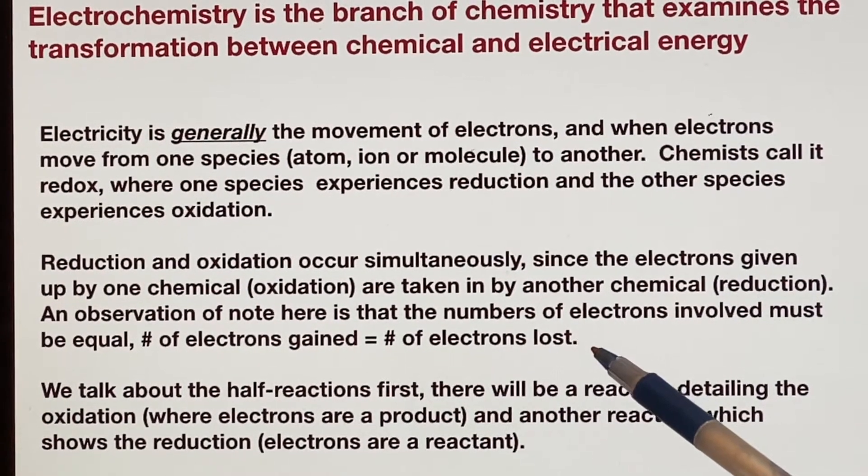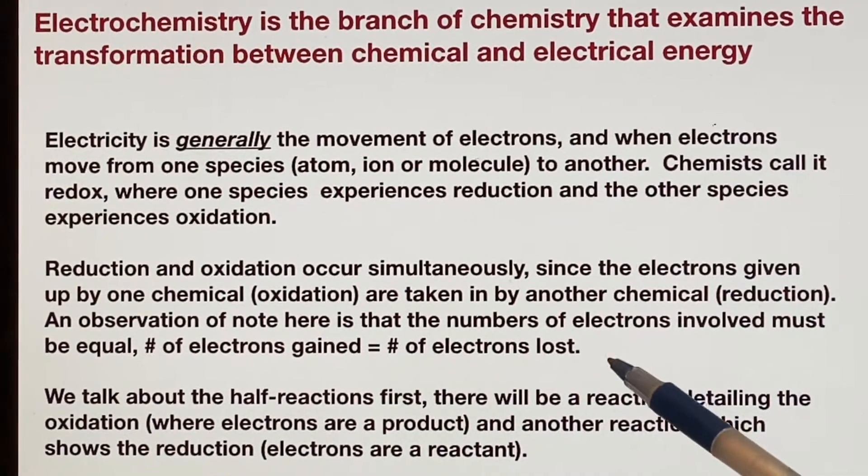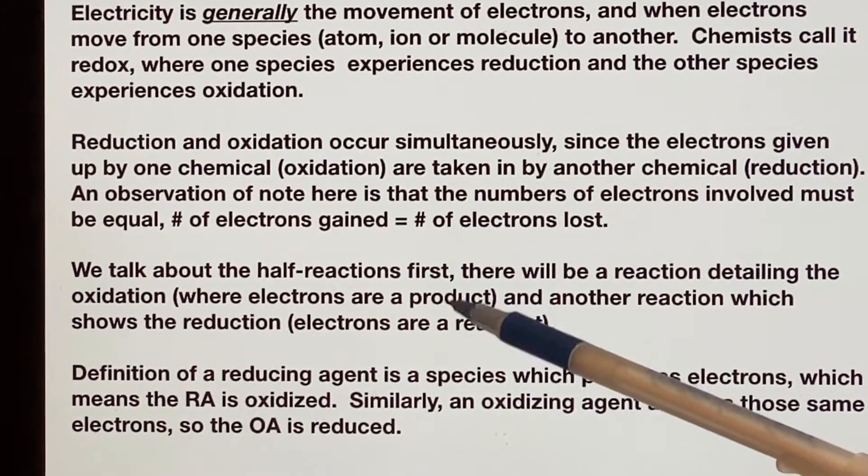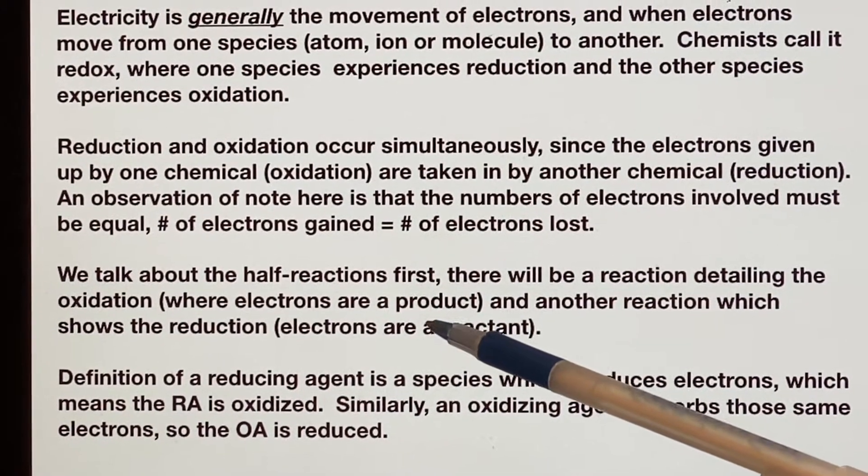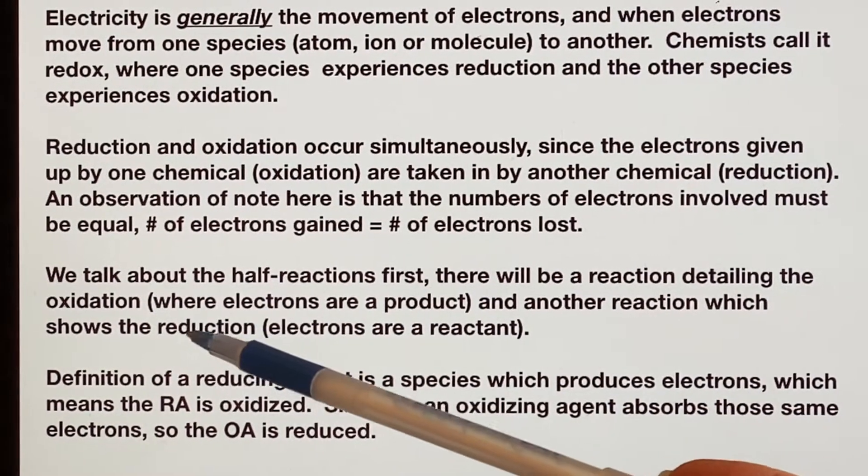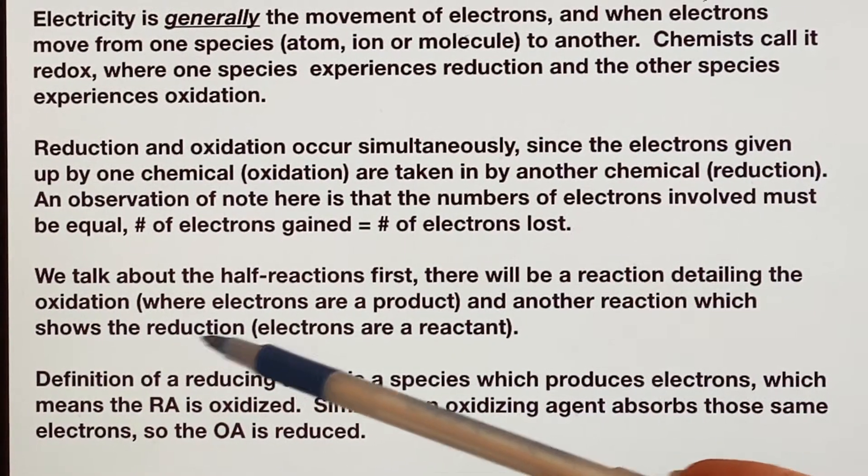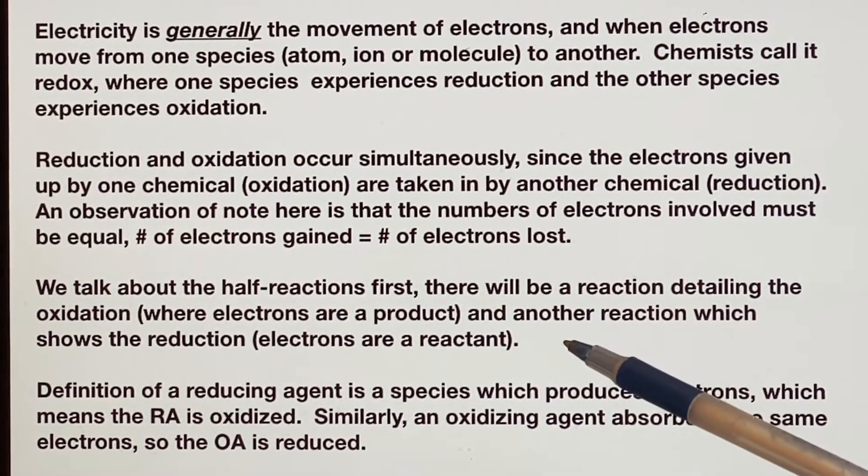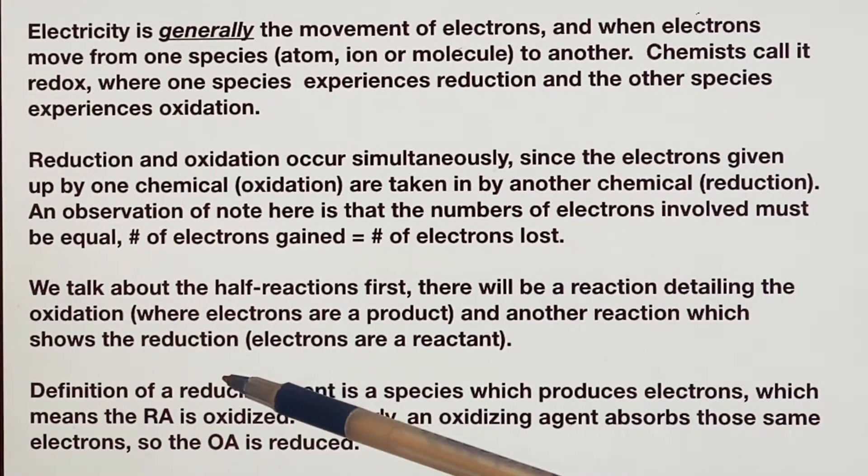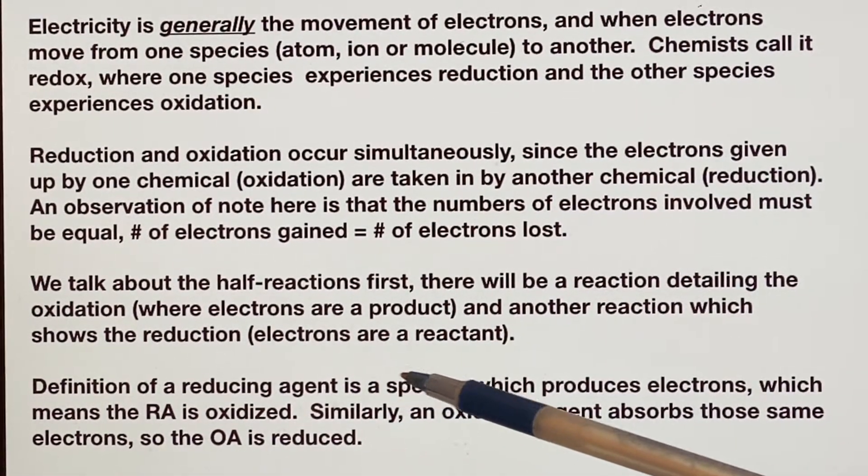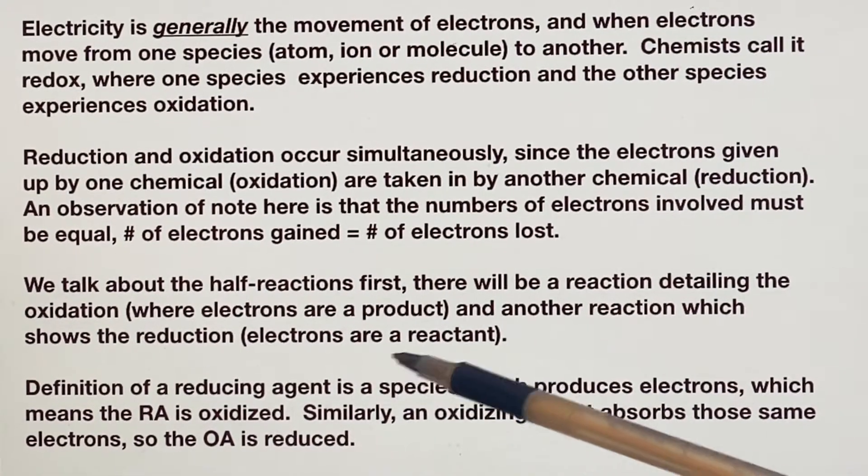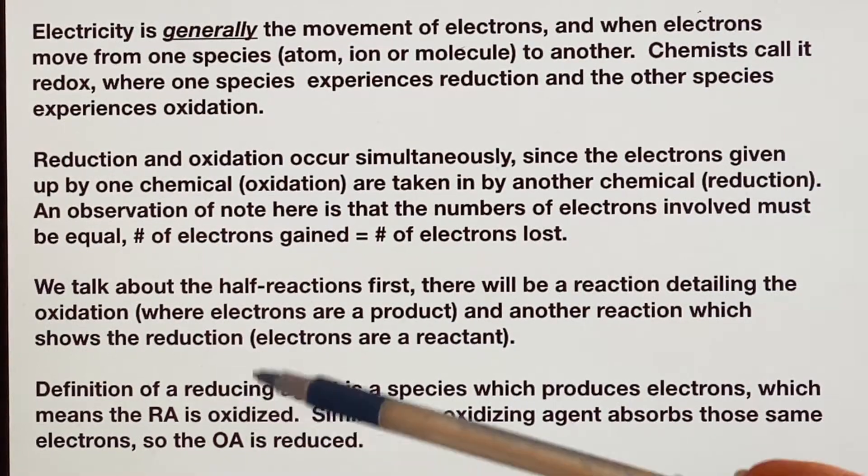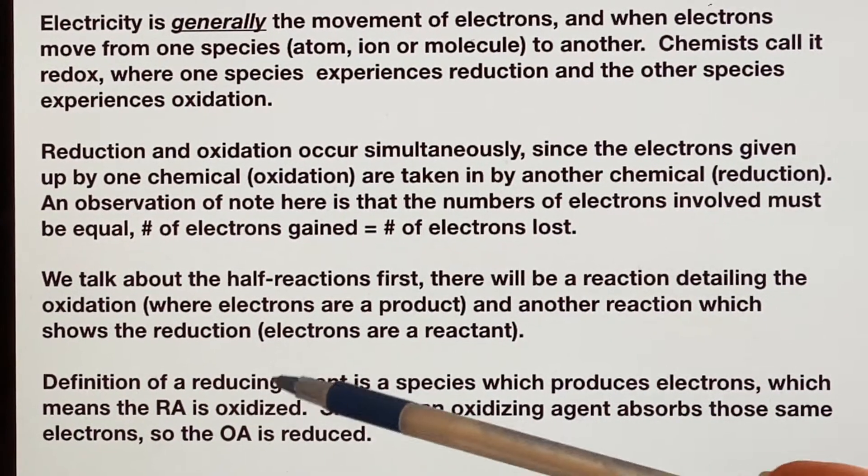These electrons, if one set gives them up, the other set of chemicals is going to pick those electrons up. What we do is we break this down into half reactions. We'll talk about a reaction where the oxidation is occurring and electrons are produced, and a different reaction where it's the reduction and the electrons are a reactant. Well that makes sense—the electrons have a negative charge, so of course when they combine with the original chemical, they are going to reduce it.